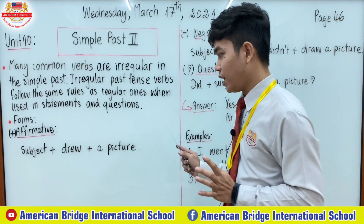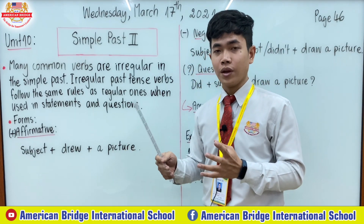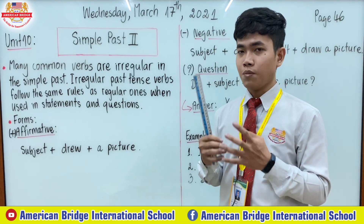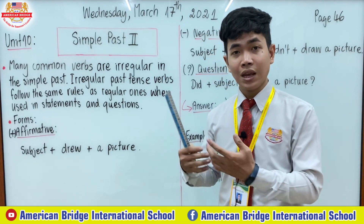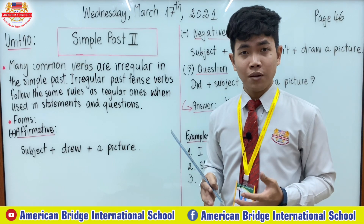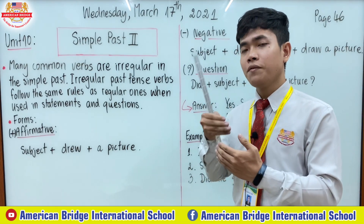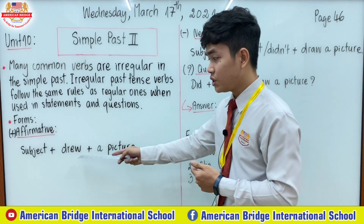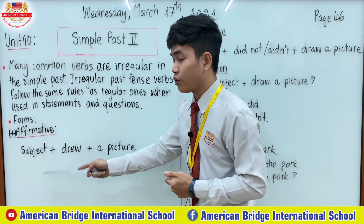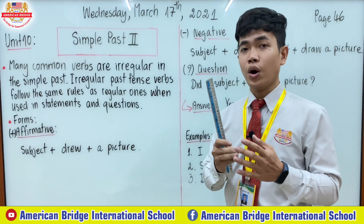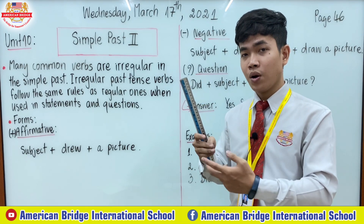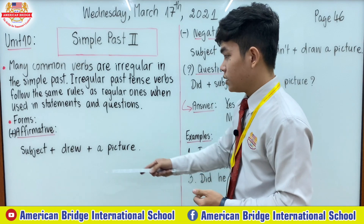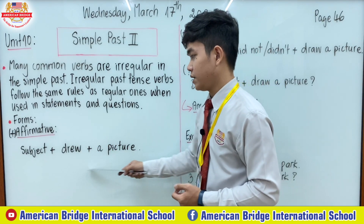Verb 2 — for example, 'drew' — comes from the verb 'draw'. We have to change the original form. It's not like regular verbs in Simple Past where you add -ed or -ied. For irregular verbs we change the original form entirely. 'Draw' is spelled D-R-A-W, and in the past tense it changes to 'drew', spelled D-R-E-W. So the affirmative form is: subject plus verb 2 plus object.